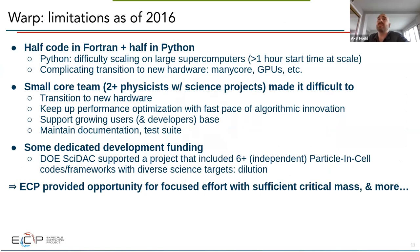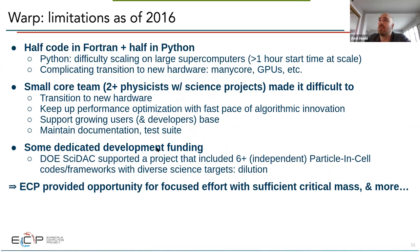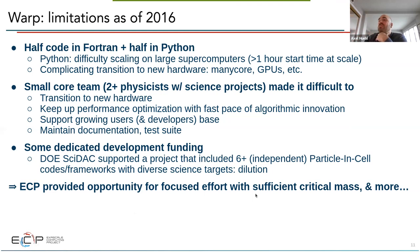In 2016, the code was modular Fortran plus Python, but challenges included learning multiple languages, difficulty scaling on supercomputers, and very hard transition to new hardware — especially many-core and GPUs. With a relatively small team and diluted funding, we couldn't push a modern software update. With the Exascale Computing Project from DOE, we had the opportunity to focus effort, specifically on laser-driven accelerators, with sufficient critical mass to address really big challenges.